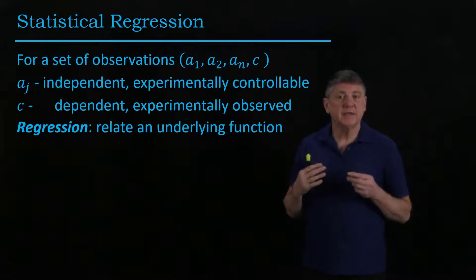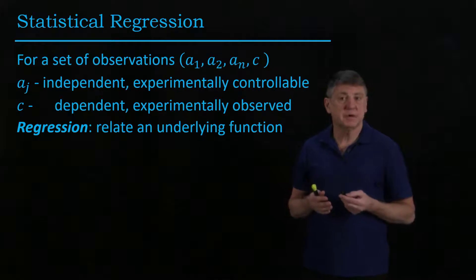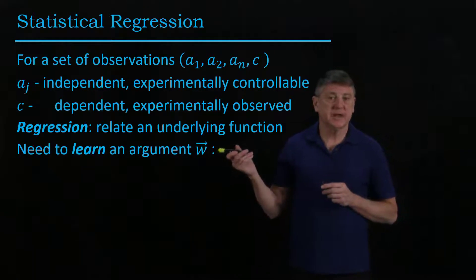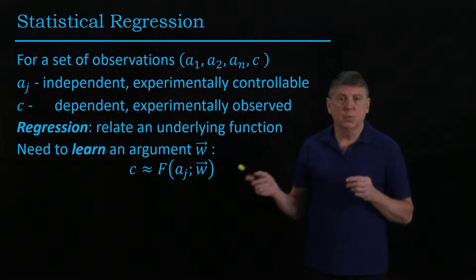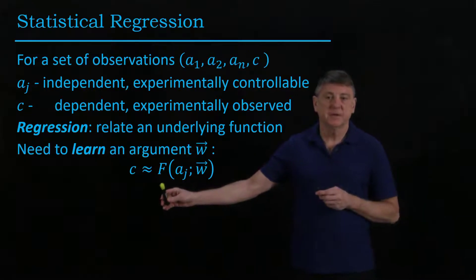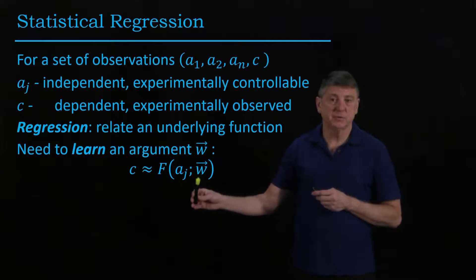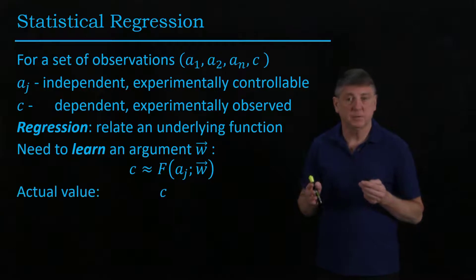Regression is to relate the independent variables and the dependent variables by using some kind of underlying function. And we're going to say that this function has an argument which is a vector, and it's a vector of weights. And what we'll suppose is that we have some function that uses the observations and uses the weights and gives us an approximation of the dependent variable.